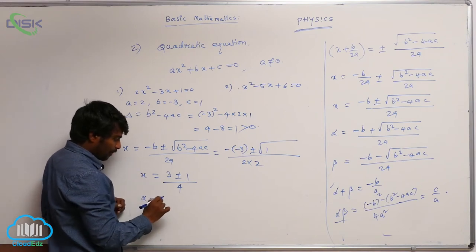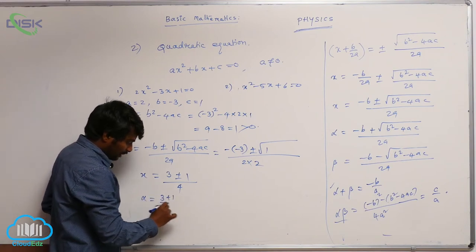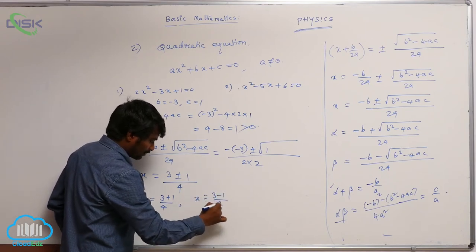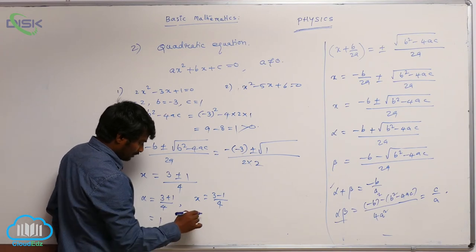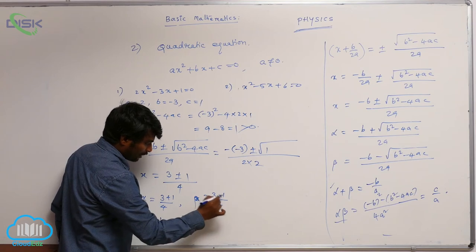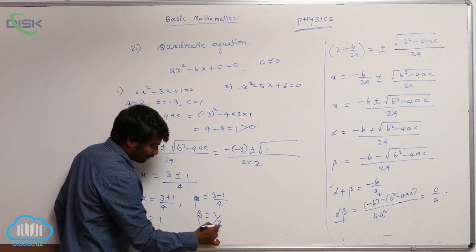One root is 3 plus 1 by 4 and another root is 3 minus 1 by 4. That is 4 by 4 is 1, beta let me take and beta 3 minus 1, 2 by 4 is 1 by 2.